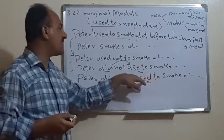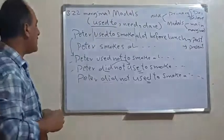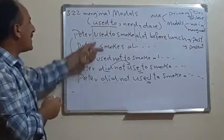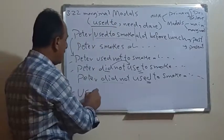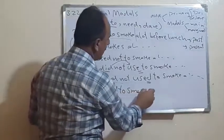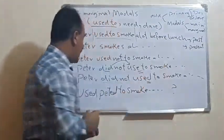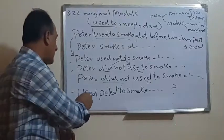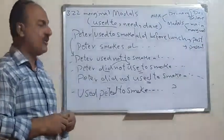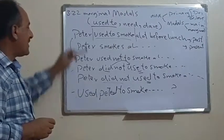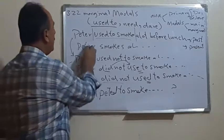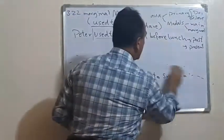In case of a question, since we consider 'used to' as an auxiliary, we put it at the beginning of the sentence and say 'Used Peter to smoke a lot before lunch?' The answer can be either yes or no. This is all concerning 'used to', and by the way you have to differentiate this expression 'used to' from 'used to' preceded by 'be'.